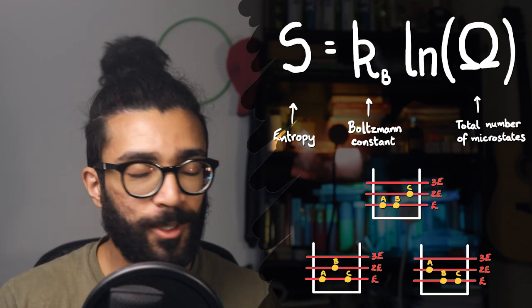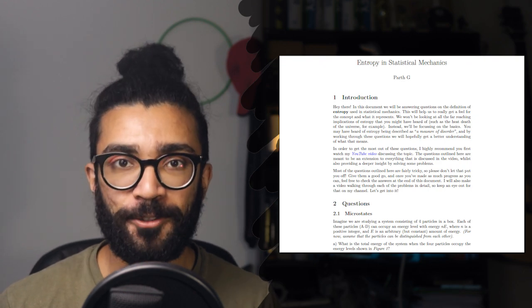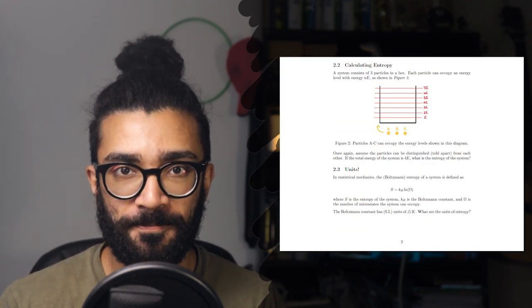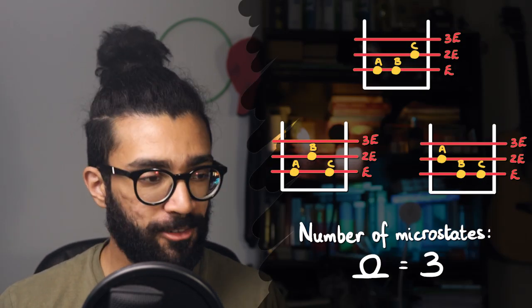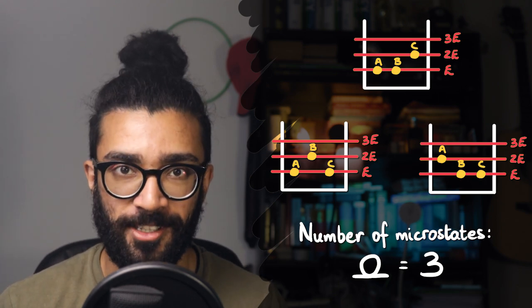You might also remember that for my previous video I wrote up a little document containing five questions for you to have a go at, and the idea was that attempting those five questions would give you a better understanding of what entropy actually is and how it's used in practice by physicists. In this video we will be going through the first of those five questions, which specifically focuses on counting microstates.